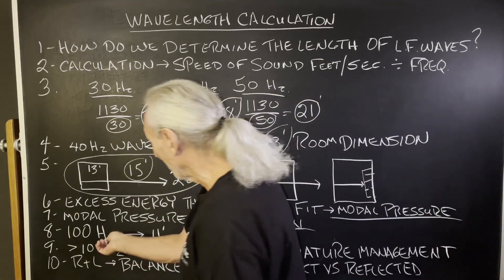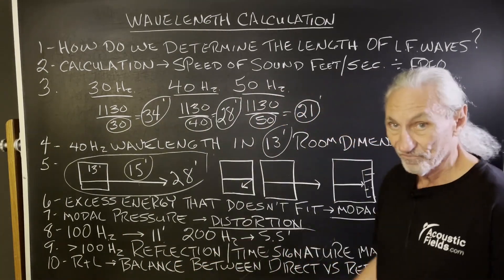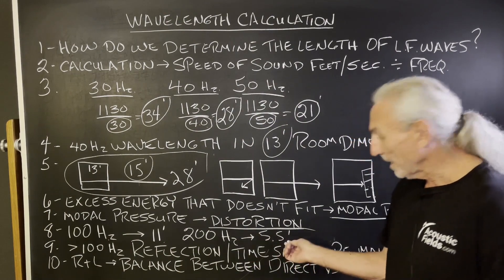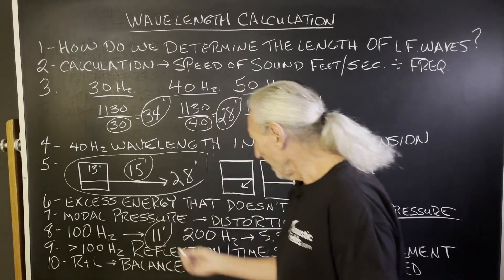Now let's do the other side of the scale. Let's take 100 cycles and above. What's 100 cycle? About 11 foot, approximately 11.3. 200 cycles, about 5.5. Those dimensions will start to fit in our rooms.